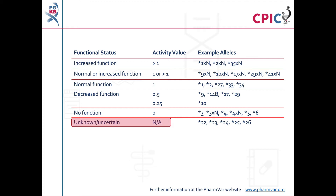In addition, an important caveat for all genotyping tests is that any alleles which are not detected in the assay are designated as star 1. This can include rare increased function, reduced function and non-functional alleles, which are not routinely screened for in some genotyping tests.